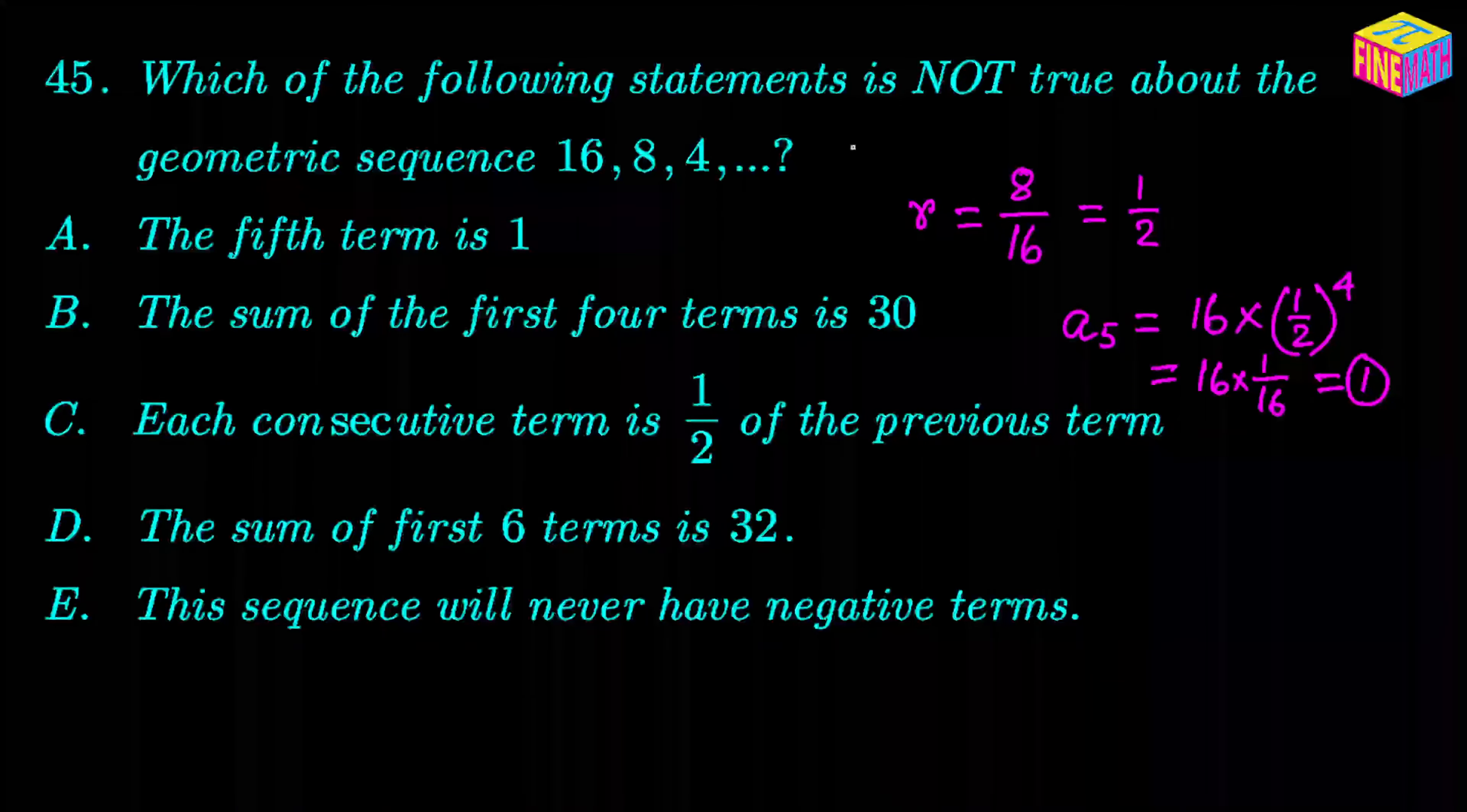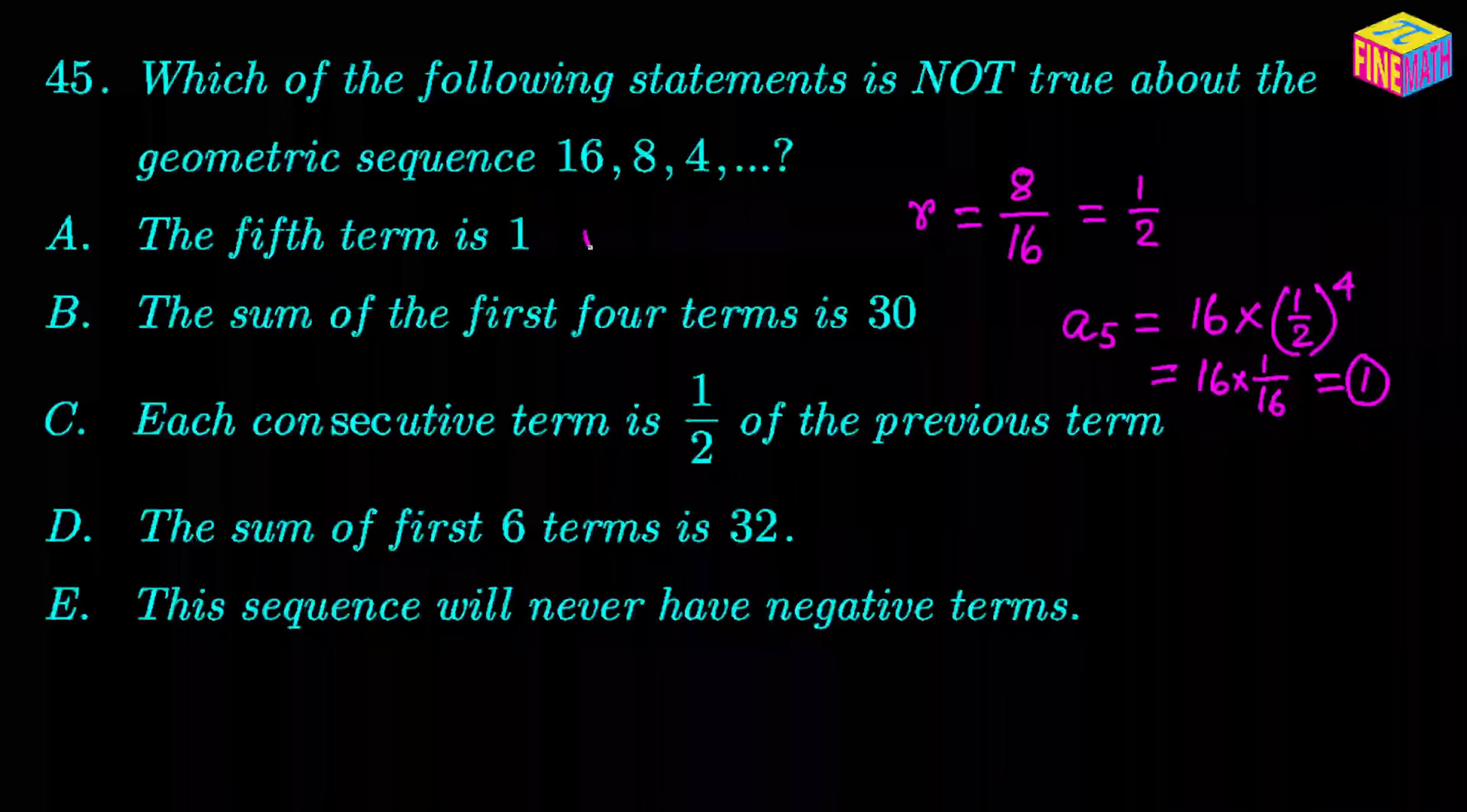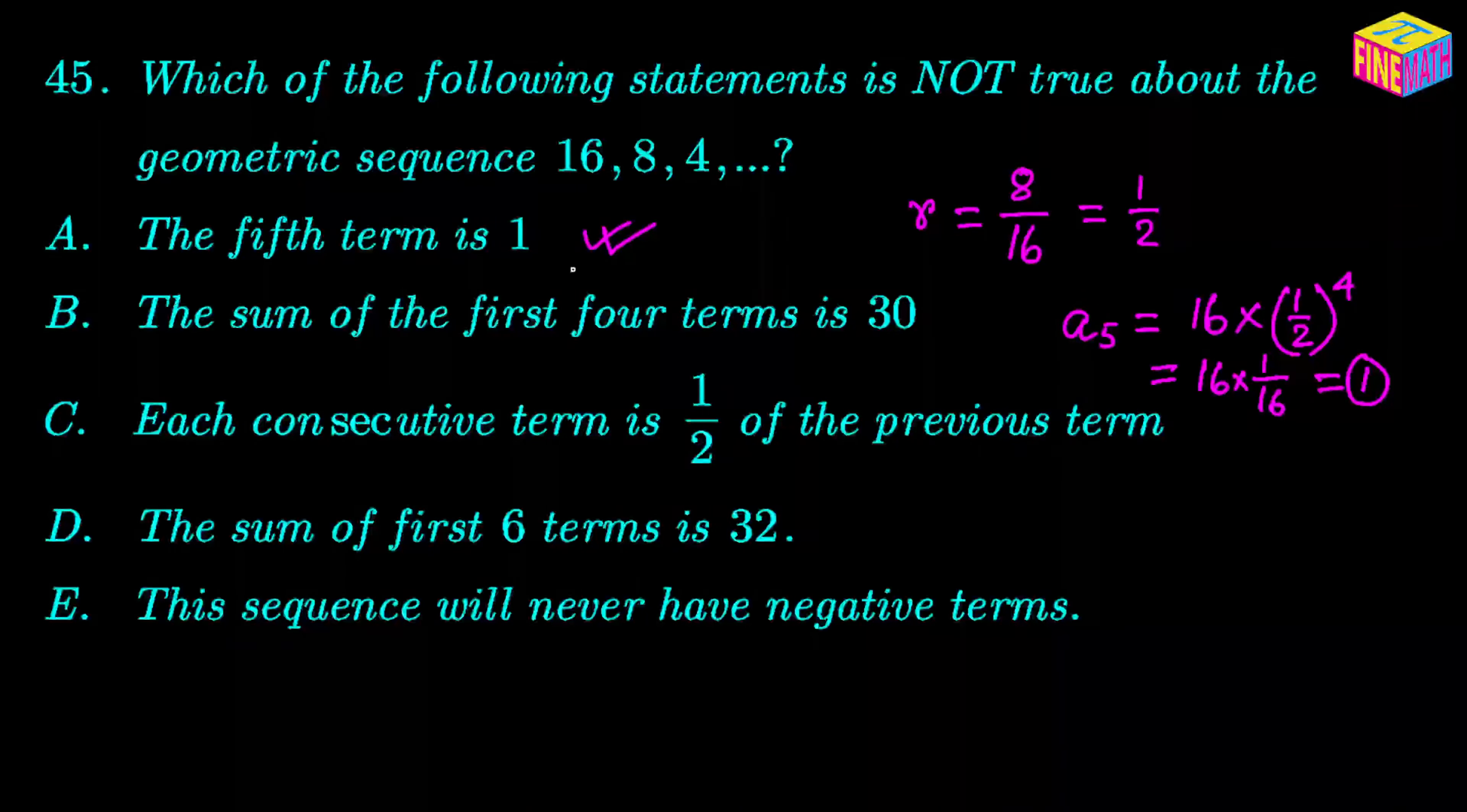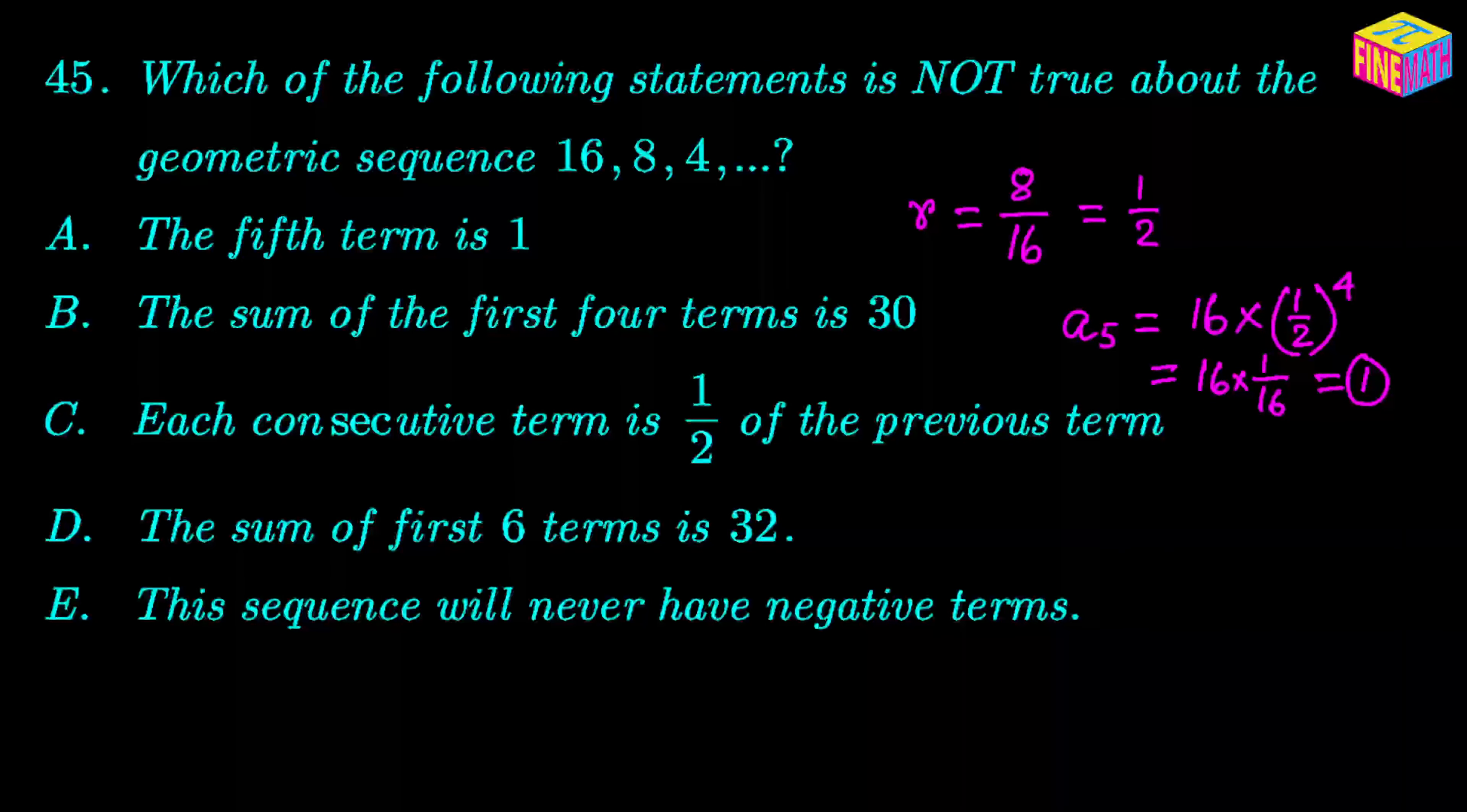It is not false, it is true. So this is not the correct option. Let's not be confused. We have to find out which statement is not true. But here we see that this is a true statement. For this particular geometric sequence, the fifth term is 1, that is a true statement. So we cannot mark that as the correct answer option. So A is not the correct answer.